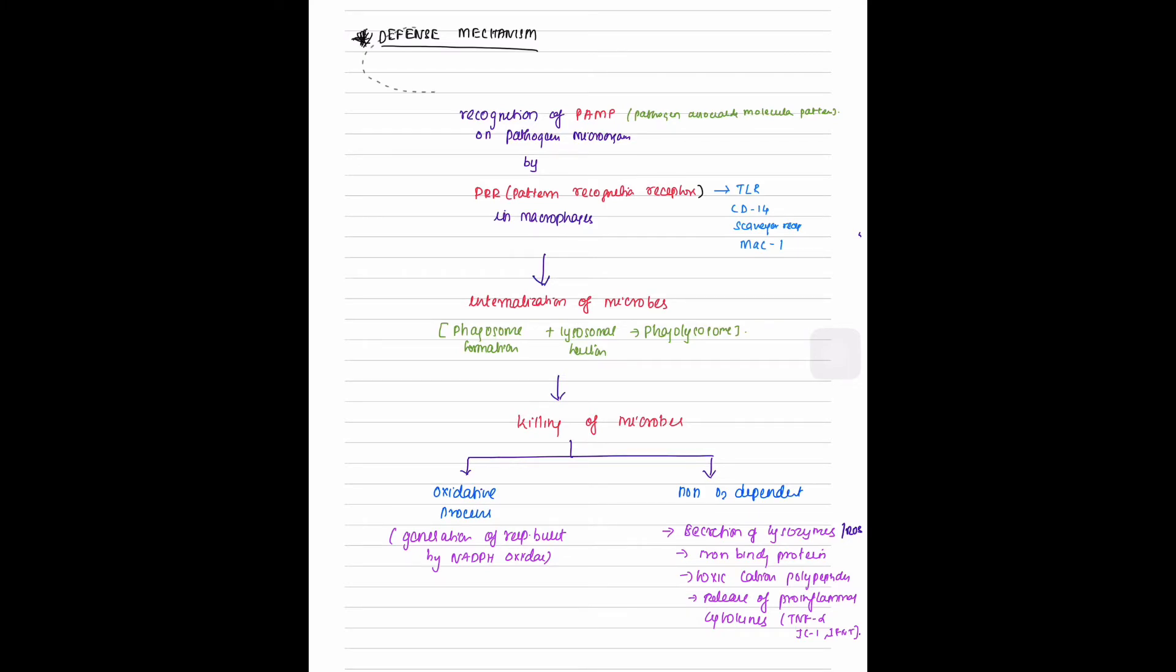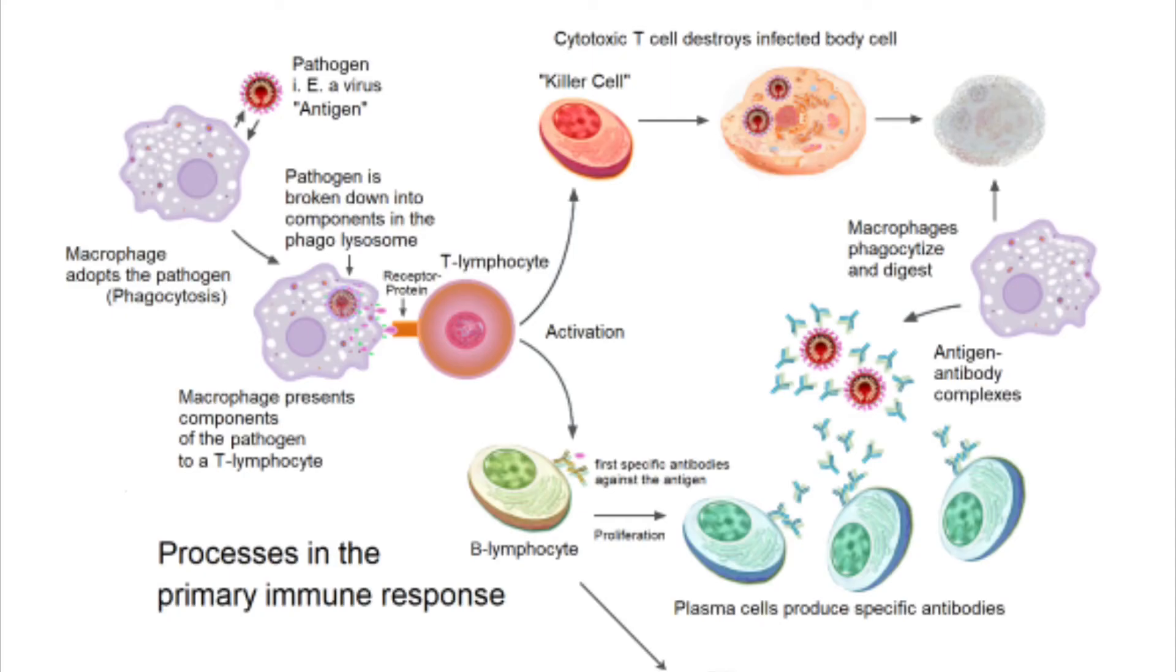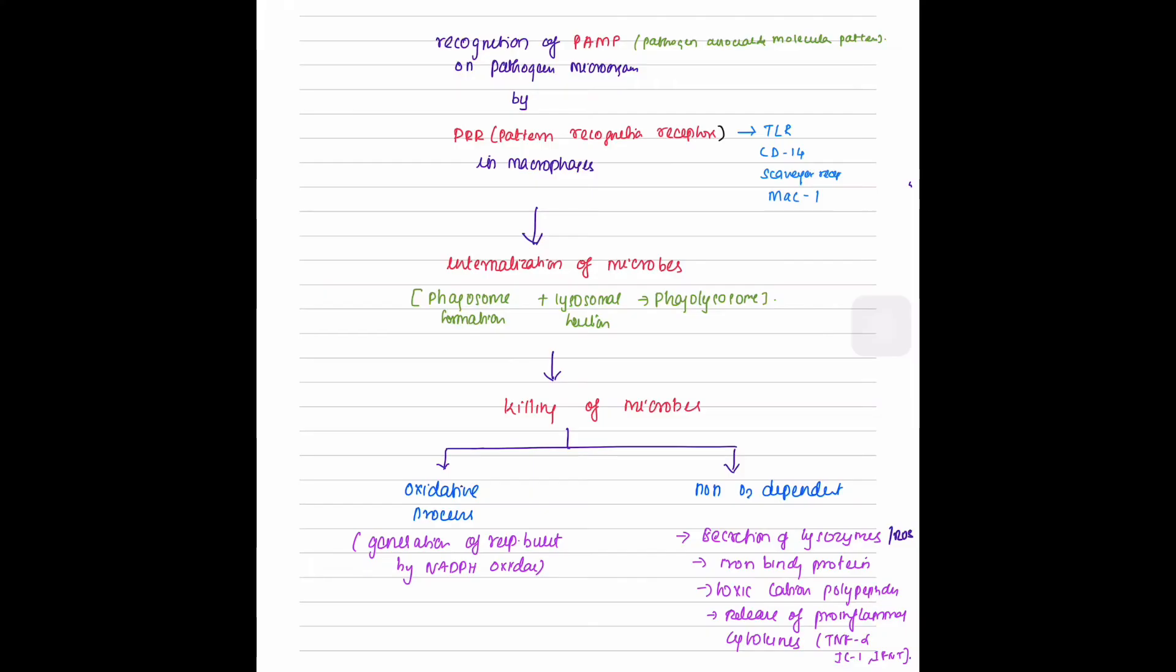Role of alveolar macrophages in defense mechanism: the alveolar macrophages play an important role in scavenging microbes such as viruses, bacteria, fungi, inhaled environmental particles like coal, silica, asbestos, tissue debris, and cancers.